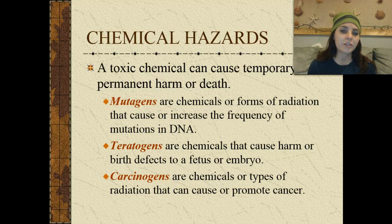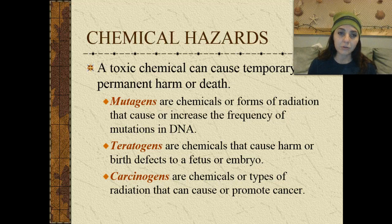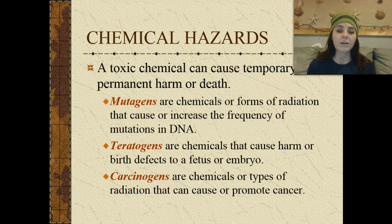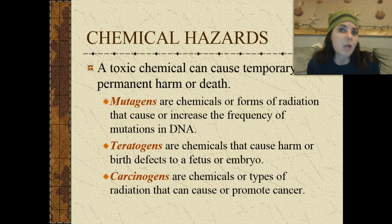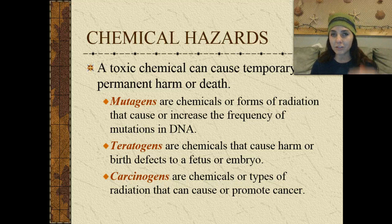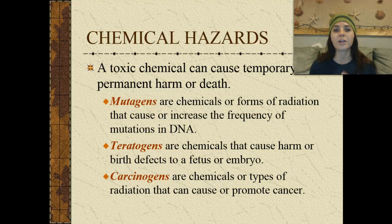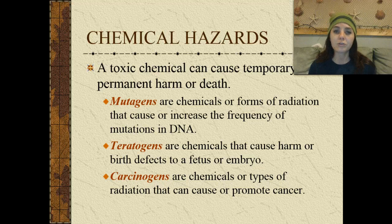Next, chemical hazards. A toxic chemical can cause temporary or permanent harm or death to humans, as well as plants and other animals. We have mutagens — chemicals or forms of radiation that can cause an increase in the frequency of mutations in our DNA. We have teratogens — chemicals that can cause harm or birth defects to a fetus or embryo. And we have carcinogens — chemicals or types of radiation that can cause or promote cancer. You may have seen these warnings on bottles in a research or biology lab.